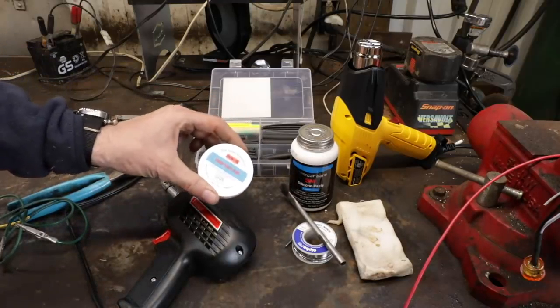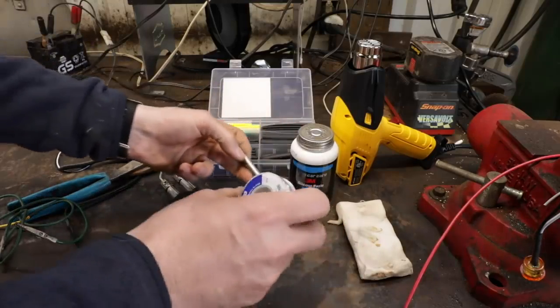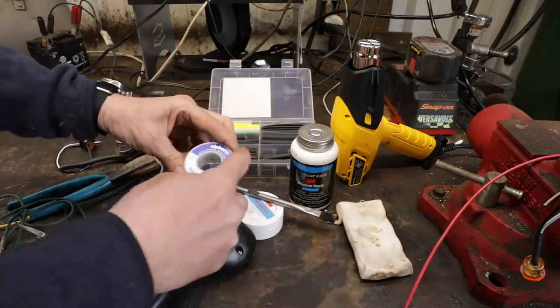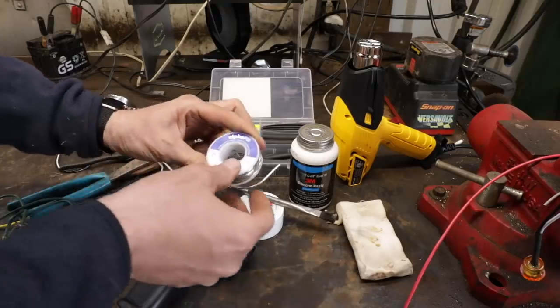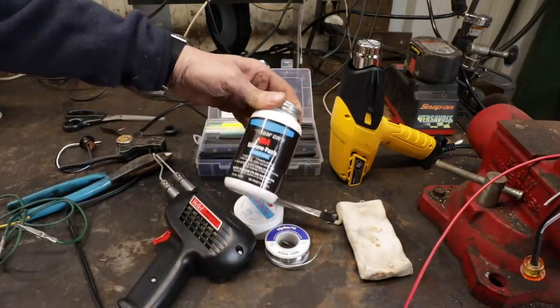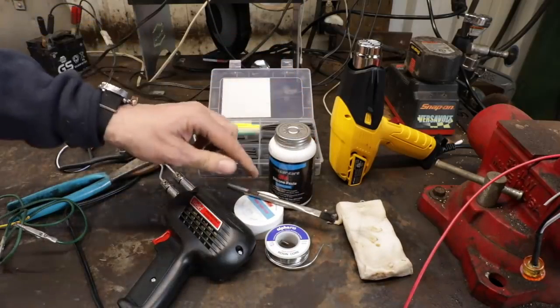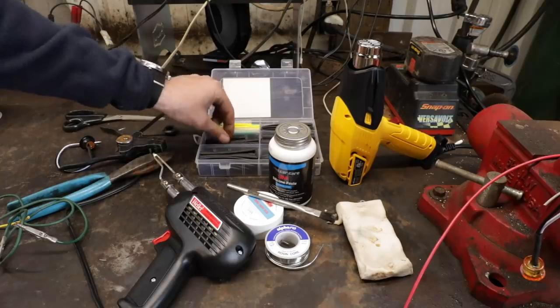You want some rosin paste flux, a little brush, and some rosin core solder. You don't want to use the solder used for plumbing—it's not the right stuff. And this right here, this stuff's amazing. This is a 3M silicone dielectric grease that we use, as well as a good selection of shrink tubing.